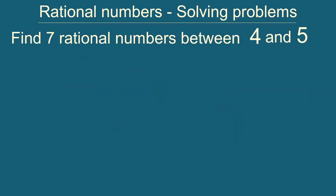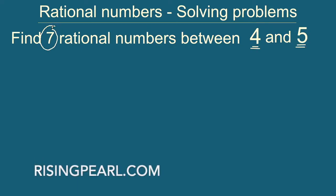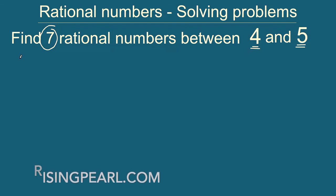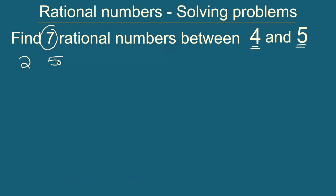Let's take a look at one other question which is almost similar, but here we basically have two integers. Between 4 and 5, the question is to find out 7 rational numbers. So how do we solve something like this? There is no denominator given. If we had consecutive integers with more gap it would be easier — for example between 2 and 5, find 2 rational numbers; we could say 3 and 4. But here 4 and 5 are consecutive integers and we have to find 7 rational numbers. So one way is to write 4 as 4 by 1 and 5 as 5 by 1.